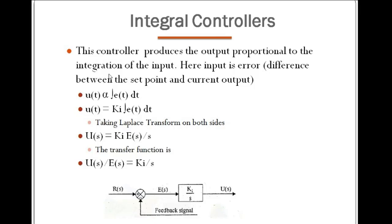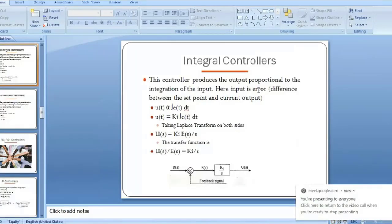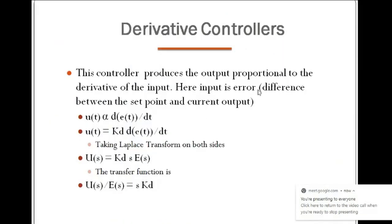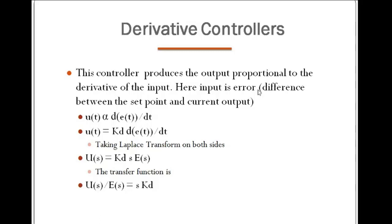So we have one more controller. We have discussed present error with the proportional controller, and past error with the integral controller — what is next? Future! The derivative controller will work on the future value. It will not consider the past or the present; it focuses on the future alone — what we will be at the 10th second, the 20th second, the 30th second.